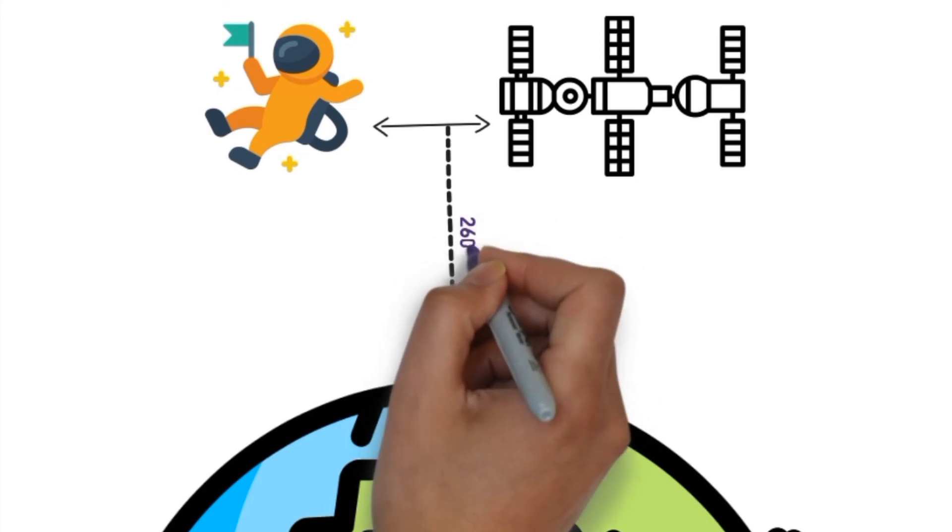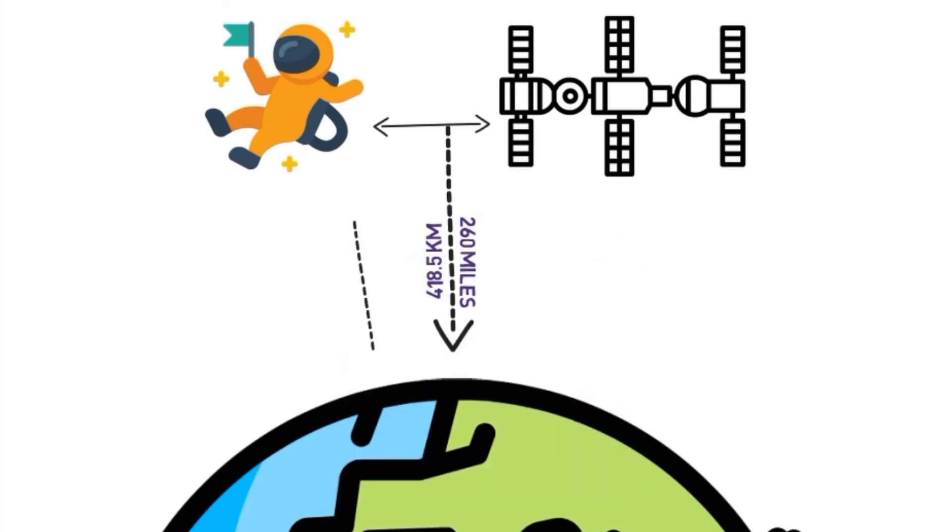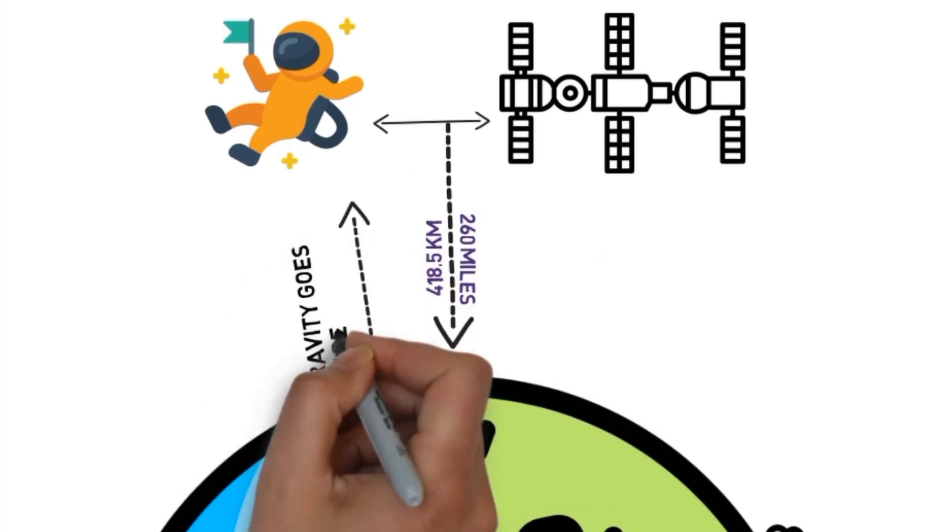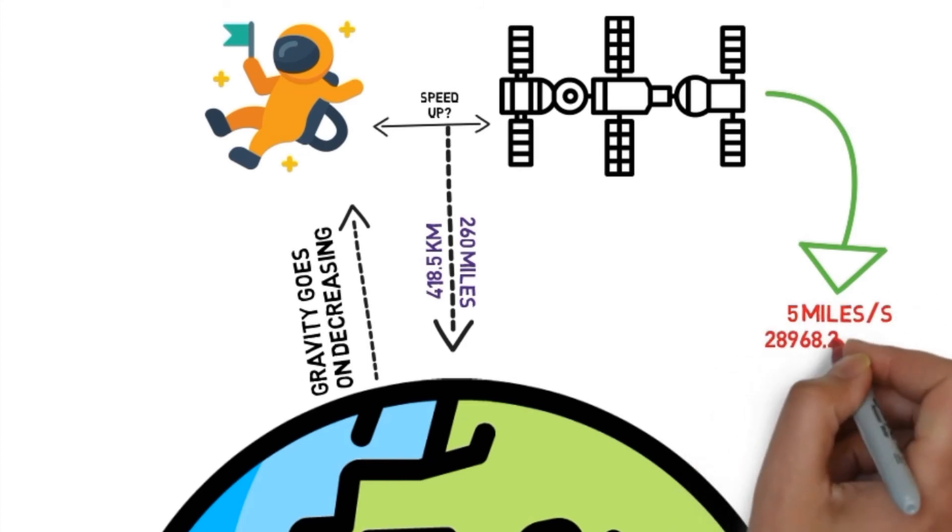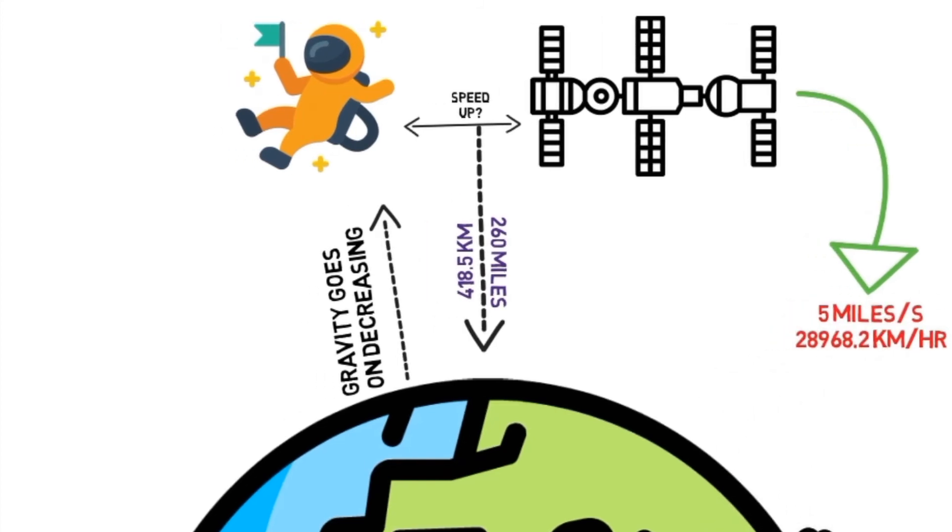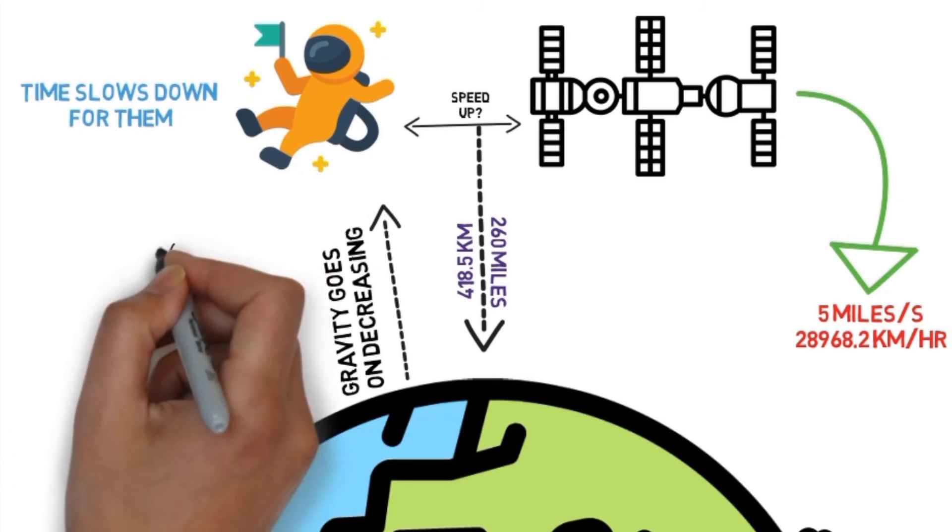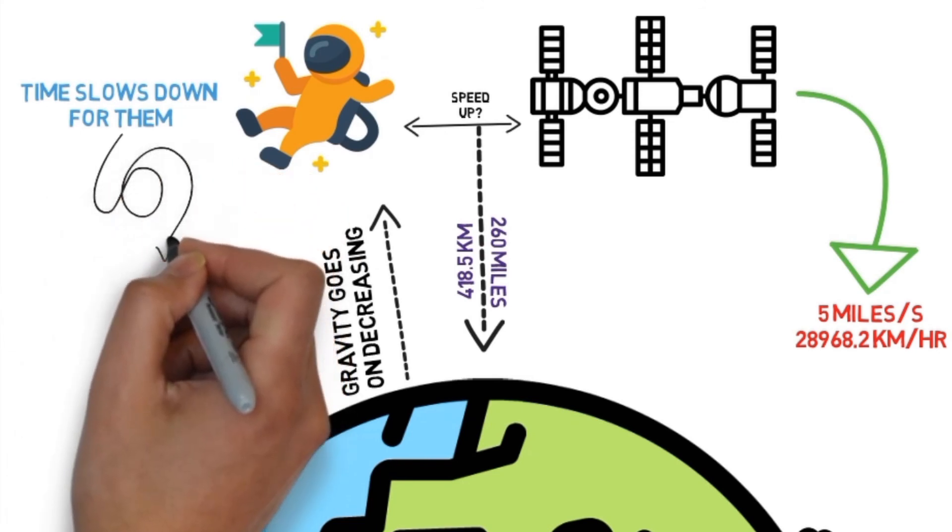They're floating about 260 miles above, where Earth's gravitational pull is weaker than it is at the surface. That means time should speed up for them relative to people on the ground. But the space station is also whizzing around Earth at about nearly 5 miles per second. That means time should also slow down for the astronauts relative to people on the surface.